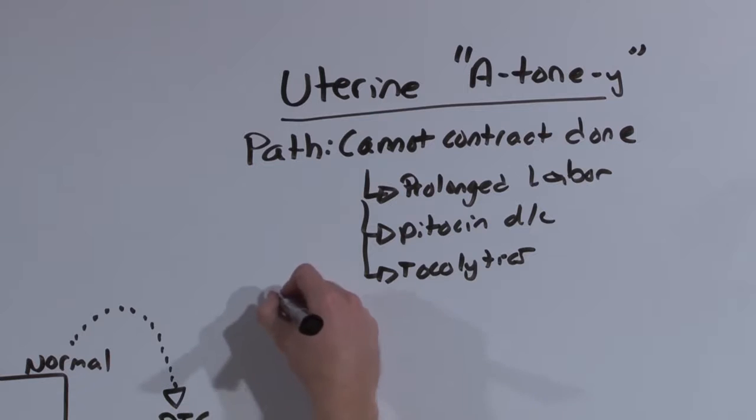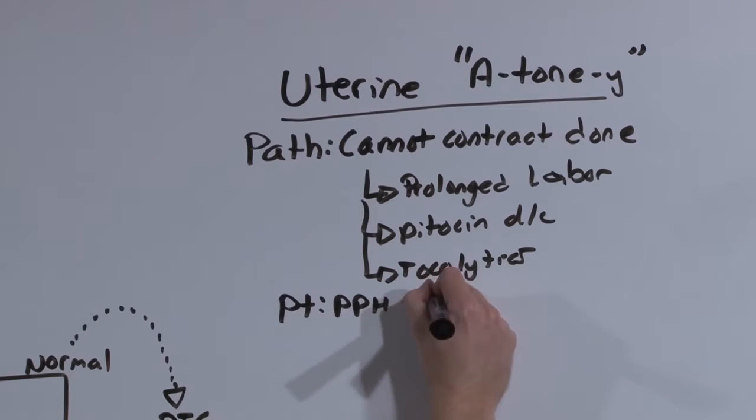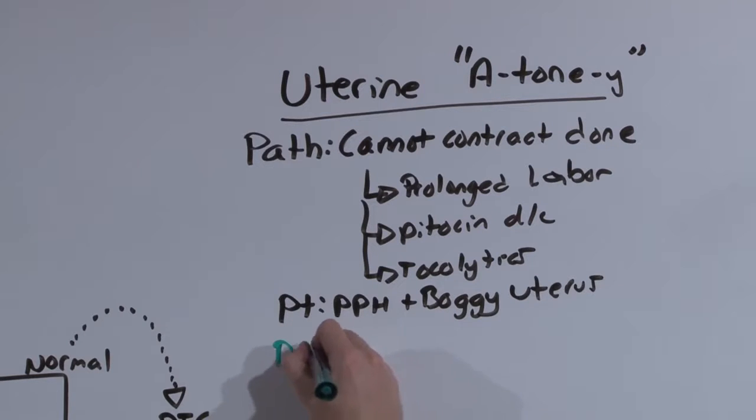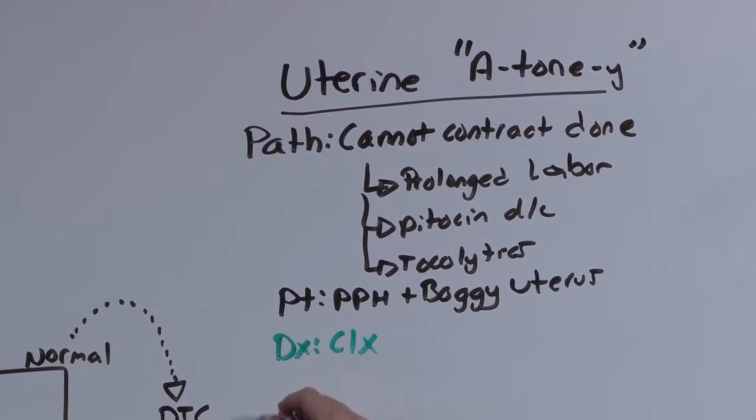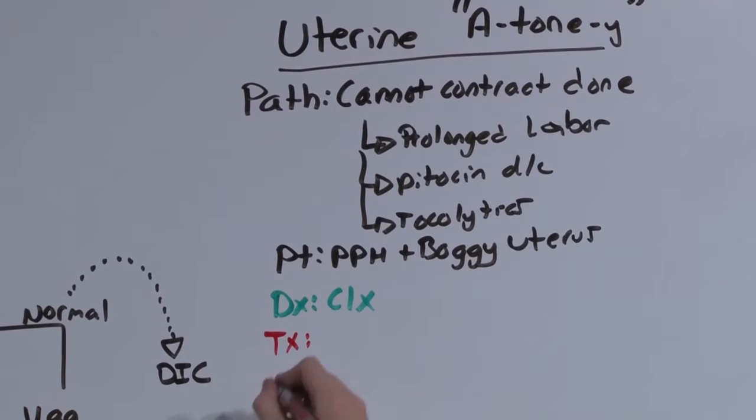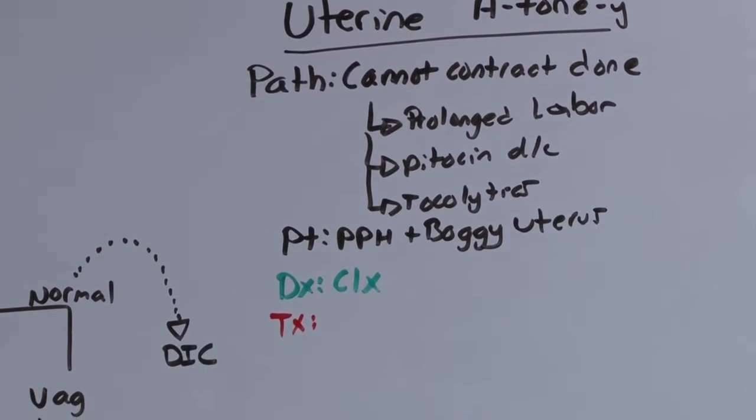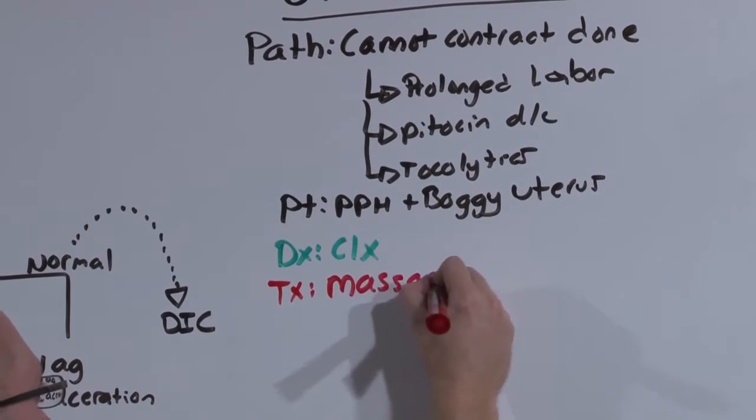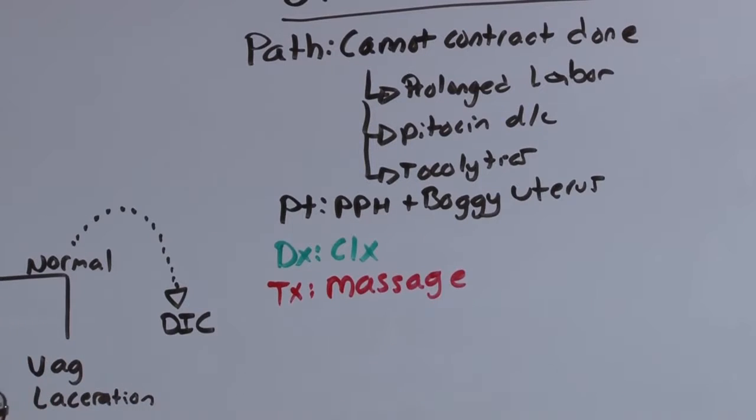The patient is going to present with a postpartum hemorrhage and a boggy uterus. The diagnosis is clinical. And the treatment is to get the uterus contracted down. You're going to do this first with massage. Stimulate the uterus. Get it to contract and squeeze down on itself.